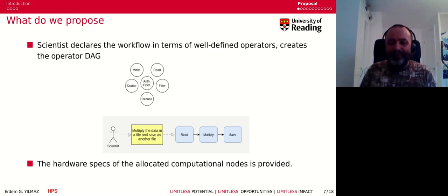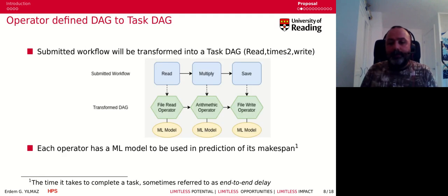The scientist declares the workflow in terms of well-defined operators and creates the operator directed acyclic graph. In this case we had three tasks: read, multiply, and save. Among the bunch of already defined operators, the user selects its task graph and forms it, and then the hardware spec of the allocated computational nodes is also given.